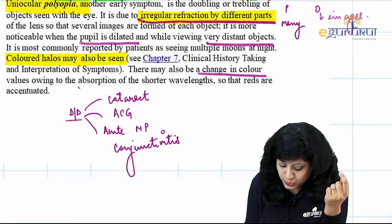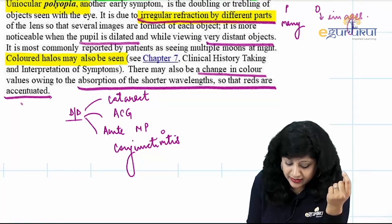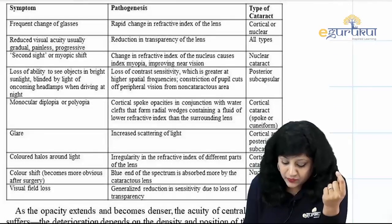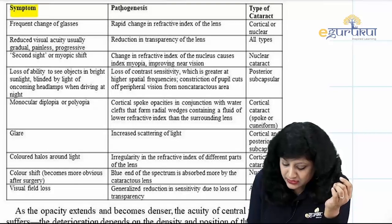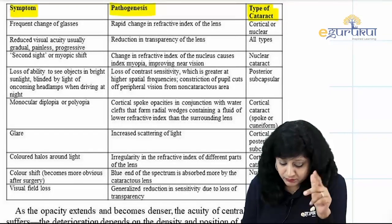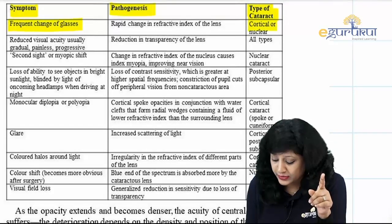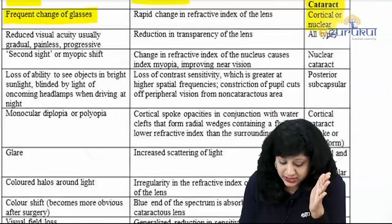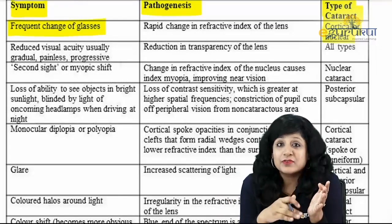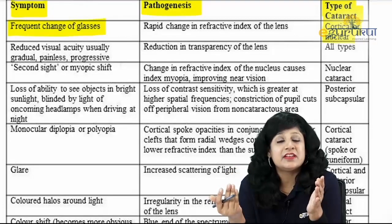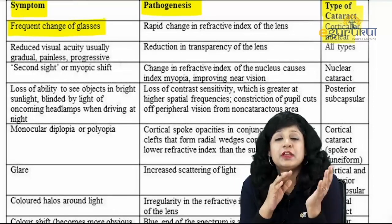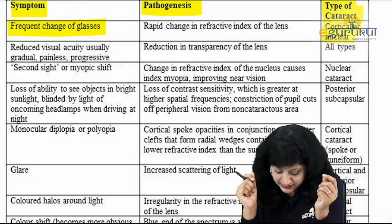There may also be a change in color values due to absorption of shorter wavelengths, so that reds are accentuated. Looking at the important table of symptoms of acquired cataract with their pathogenesis: frequent change of glasses occurs in cortical or nuclear cataract due to the rapid shift in refractive index. In nuclear cataract there is an increase in refractive index leading to progressive index myopia, while it is vice versa with cortical cataract.